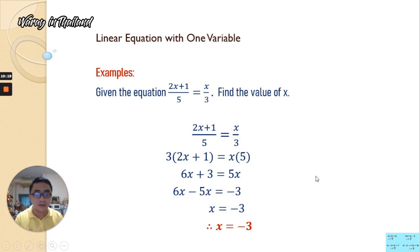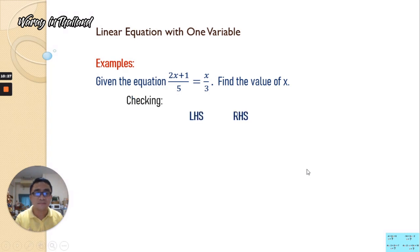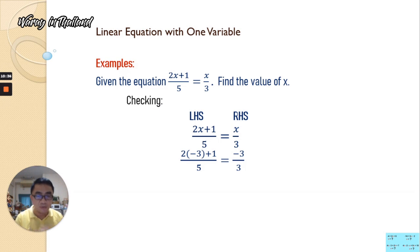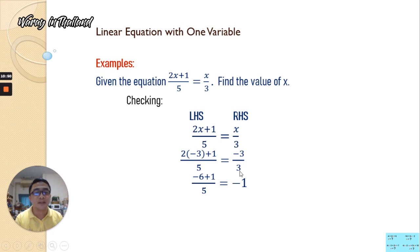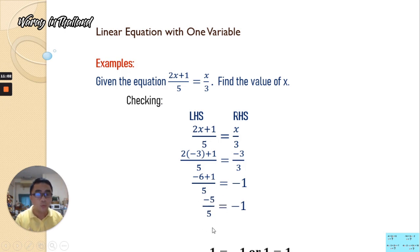We check whether x equals negative 3 is correct by substituting into the equation. On the left-hand side: 2 times negative 3 is negative 6, plus 1 gives negative 5, over 5 gives negative 1. On the right-hand side: negative 3 over 3 is negative 1. Both the left-hand side and right-hand side equal negative 1, so therefore we confirm that the variable x is really equal to negative 3.